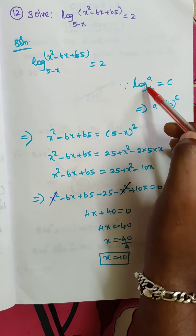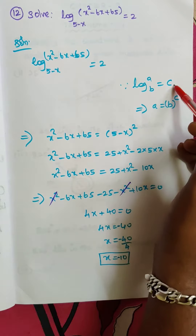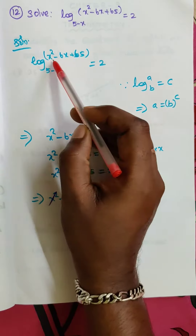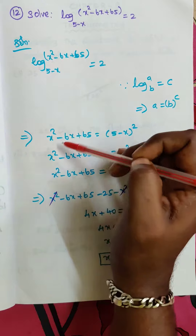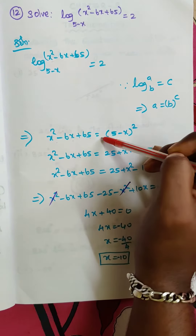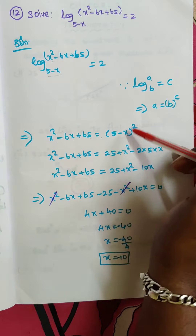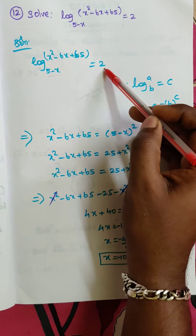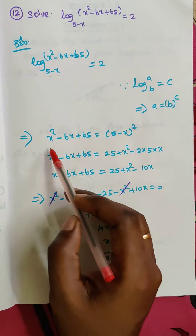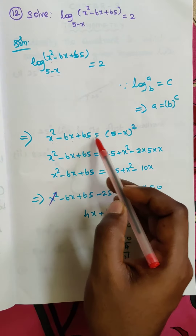The same property I am going to use here: log a to the base p is equal to c means a equals p to the power c. So here, a value x² - 6x + 65 is equal to b value (5 - x) to the whole power c value 2.